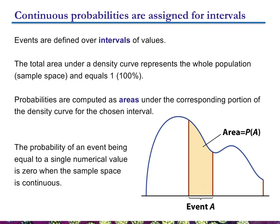The total area under a density curve always equals 100% because you've defined all possible outcomes. Probabilities represent areas under some portion of the density curve — the area defined by an interval between two values. An important point: the probability of an event being equal to a single numerical value is zero when the sample space is continuous. Probabilities are always areas defined between two values. If you're dealing with just one value, you haven't defined an interval, so you haven't defined an area, meaning the probability is zero.